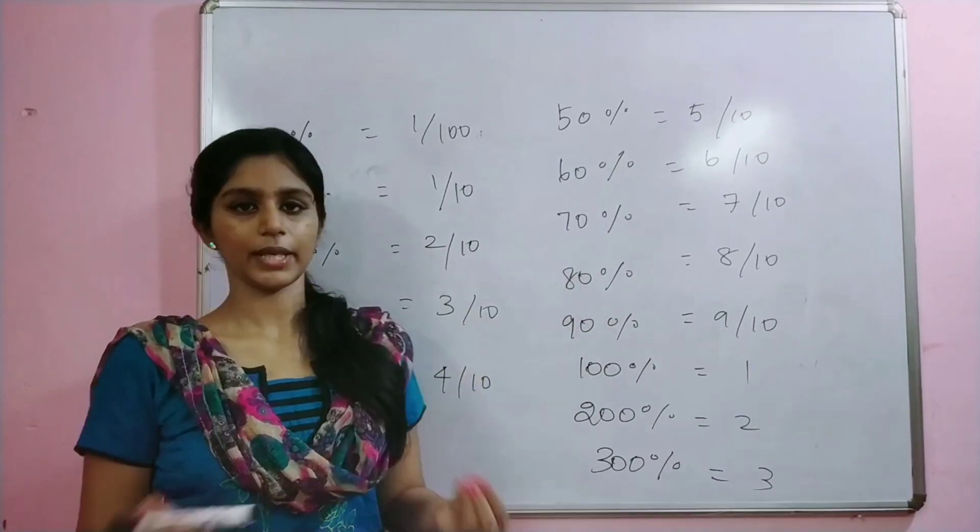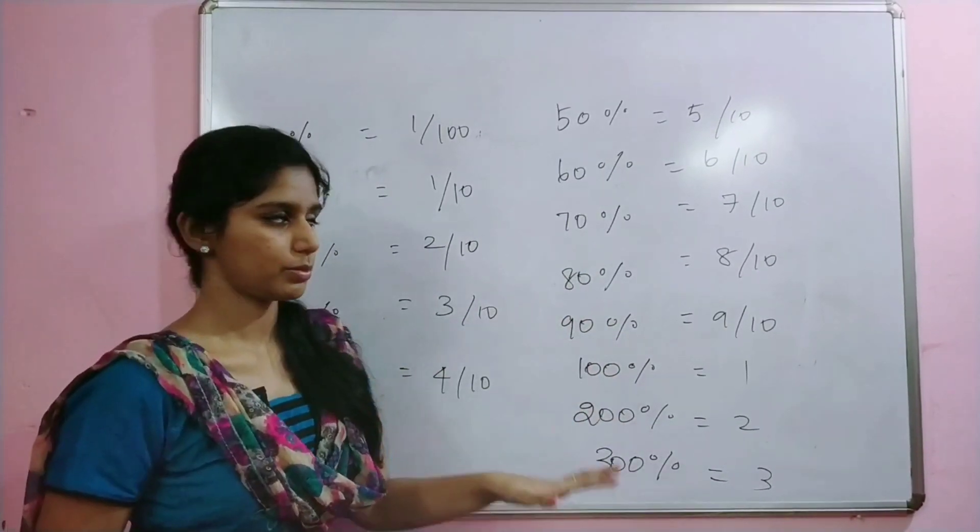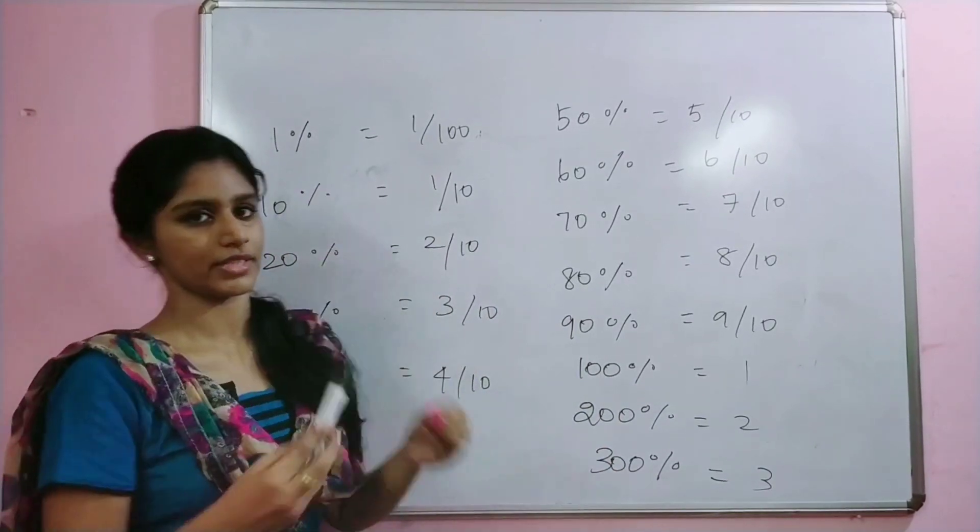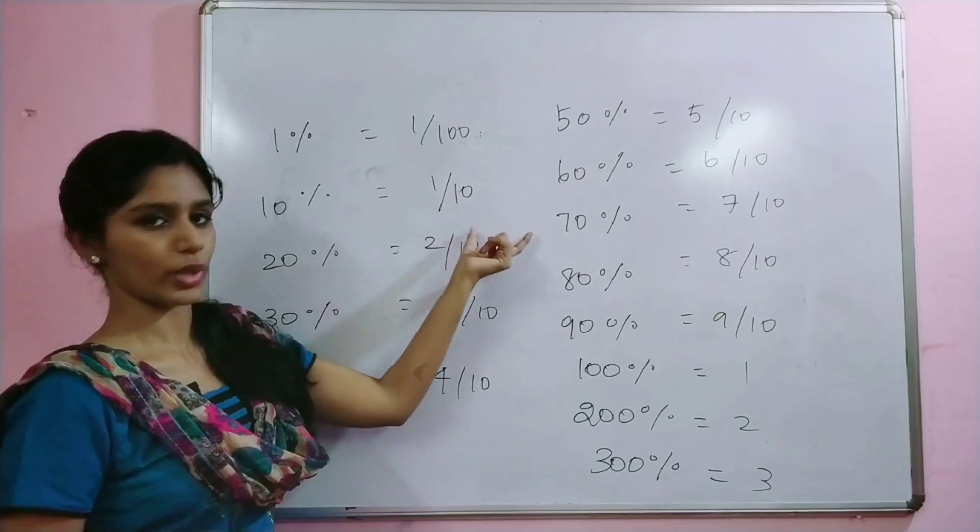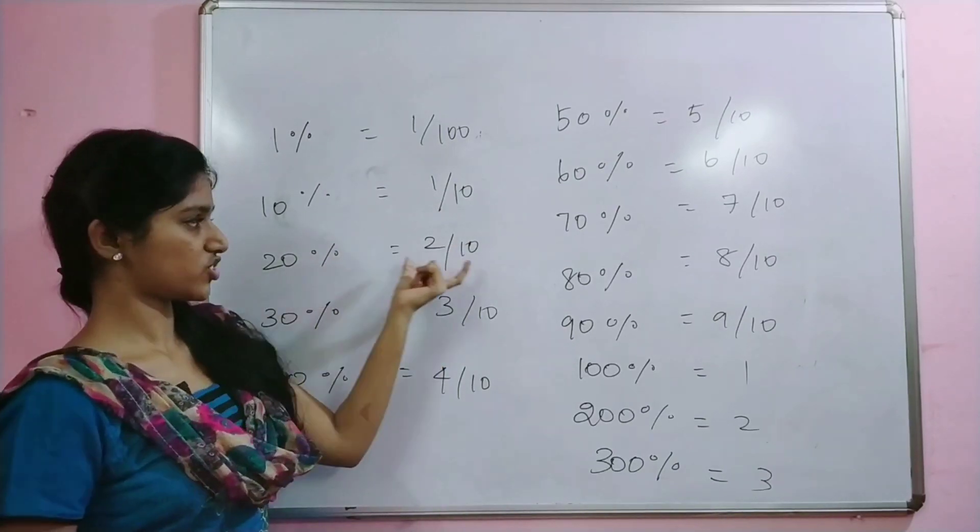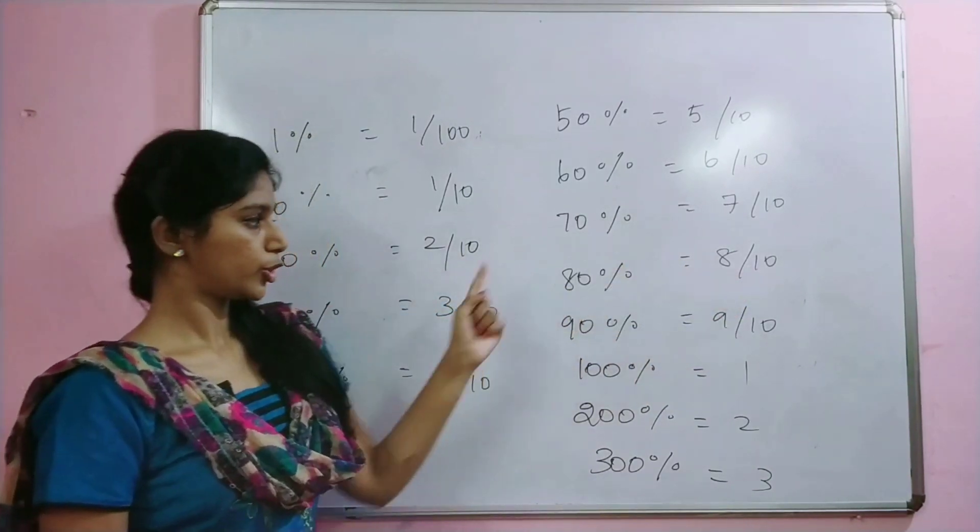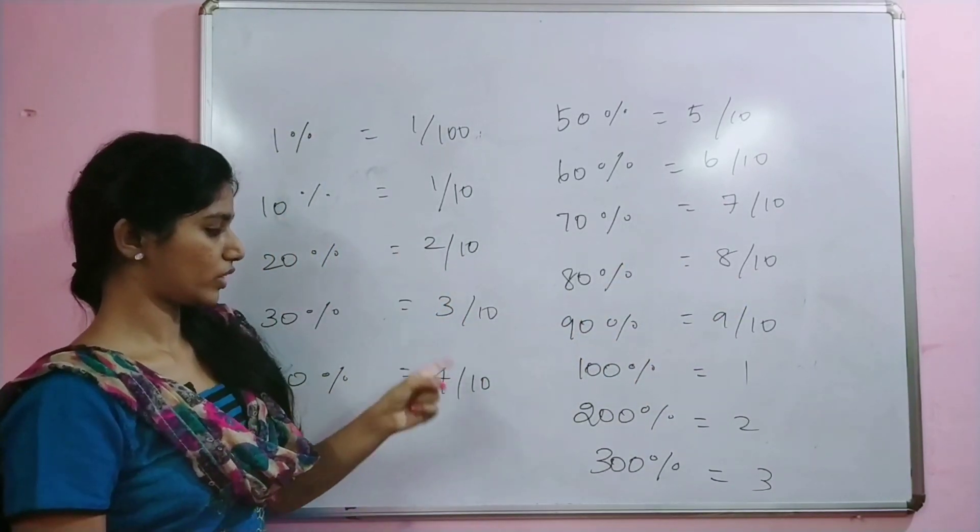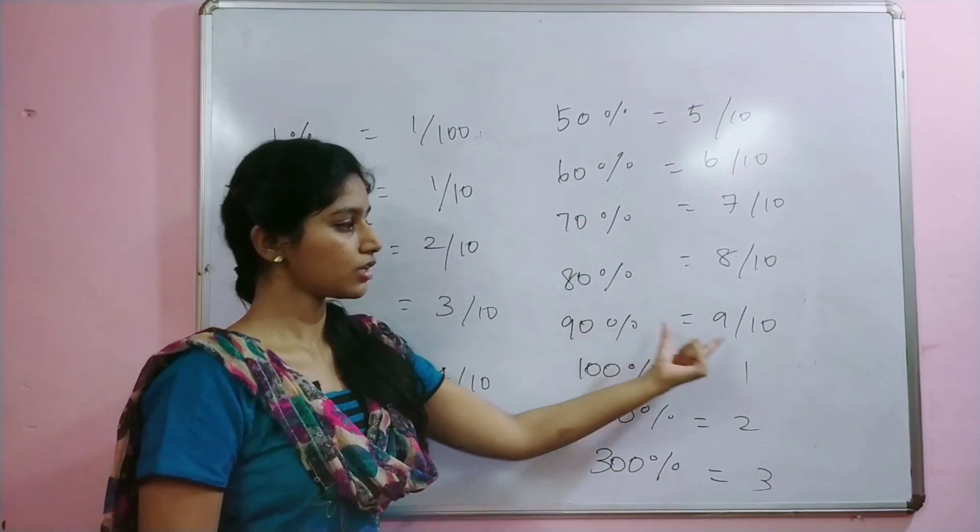If we have multiples of 10, we will get easier answers. 1 percentage is 1 by 100. 10 percentage is 1 by 10. 20 percentage is 2 by 10. The denominators up to 90 are 10. The numerators are 1, 2, 3, 4, 5, 6, up to 9. So 90 percentage is 9 by 10.